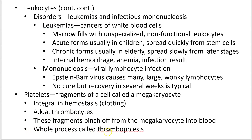The process of making platelets is called thrombopoiesis — notice that 'poiesis' ending again. To recap: hematopoiesis for blood, erythropoiesis for red blood cells, leukopoiesis for white blood cells, and thrombopoiesis for platelets. And that's the end of this video.